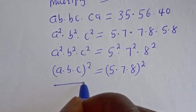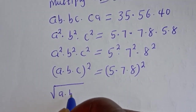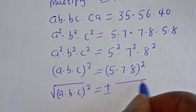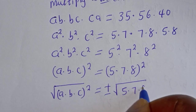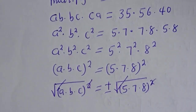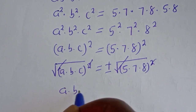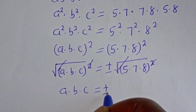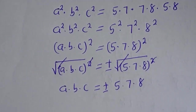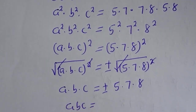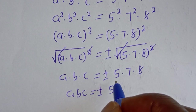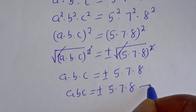Let's take the square root of both sides: A multiplied by B multiplied by C is equal to plus or minus the square root of (5×7×8)². Therefore ABC is equal to plus or minus 5 multiplied by 7 multiplied by 8. Let's call this equation 4.